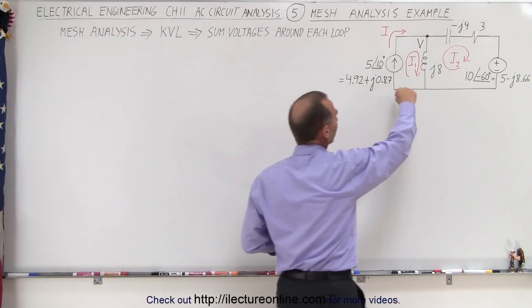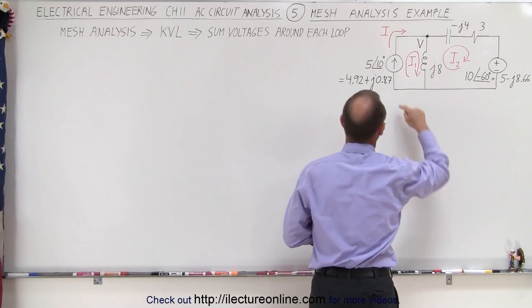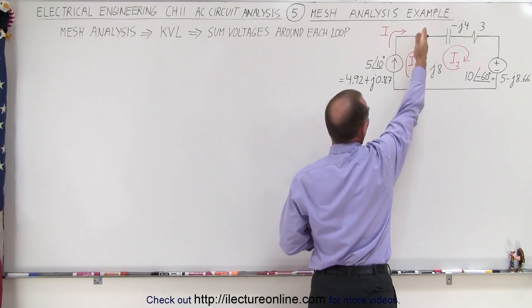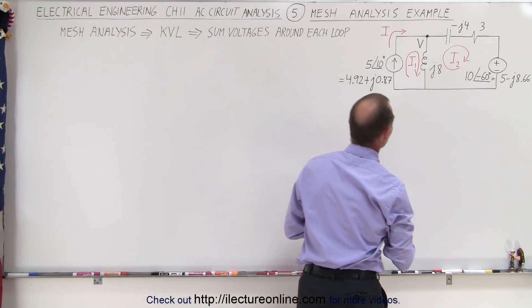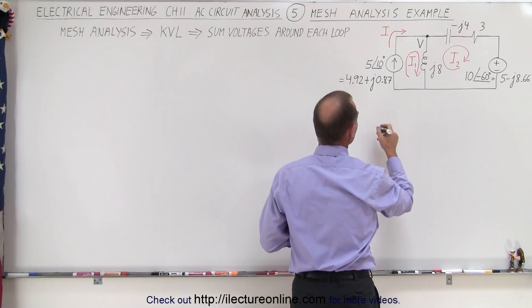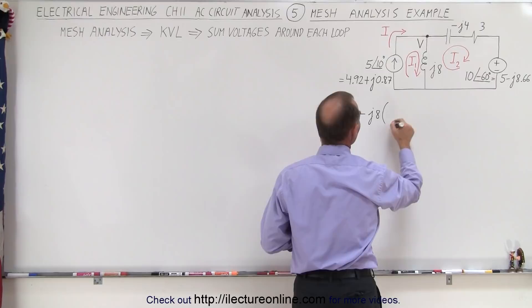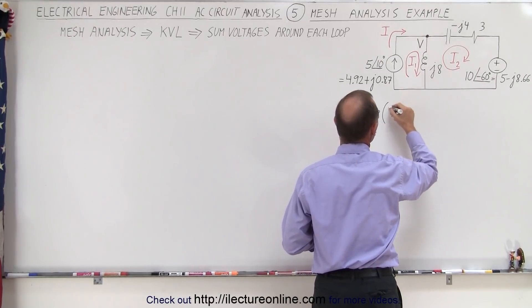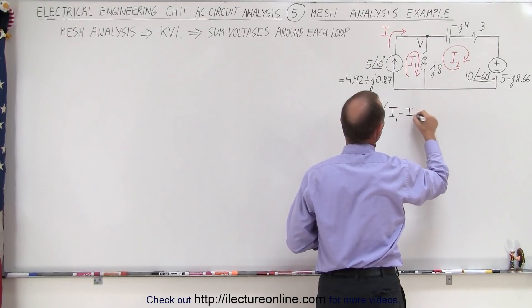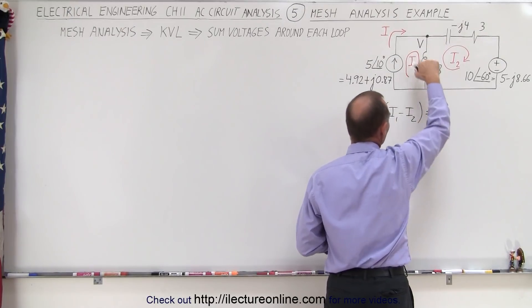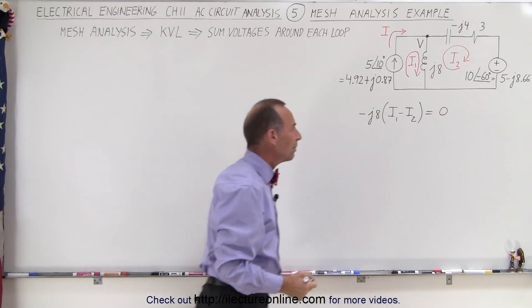So adding up all the voltages going around the first mesh, the voltage drop across the current source is equal to zero and then we have the voltage drop across the inductor. So that means we have minus the inductance J8 times the current which is I1 minus I2 since I2 flows in the opposite direction.